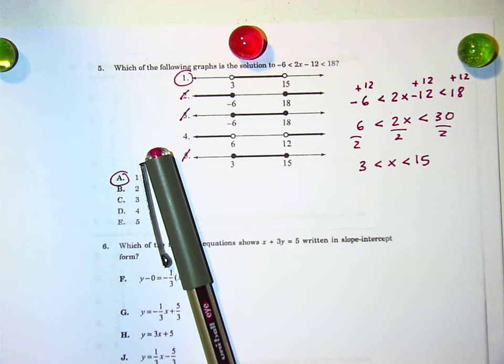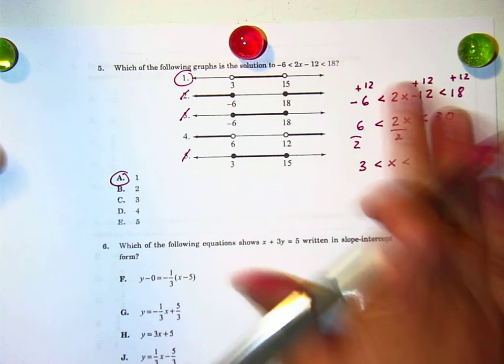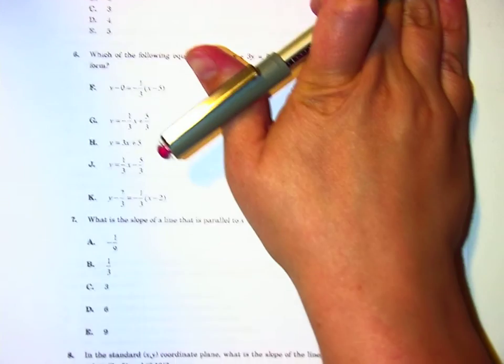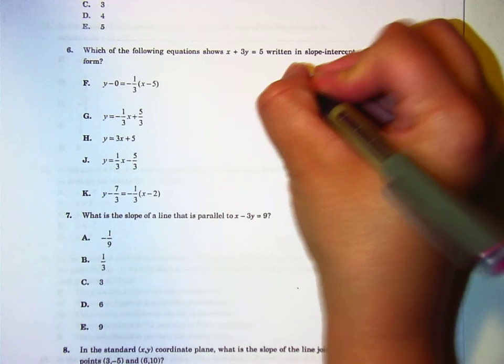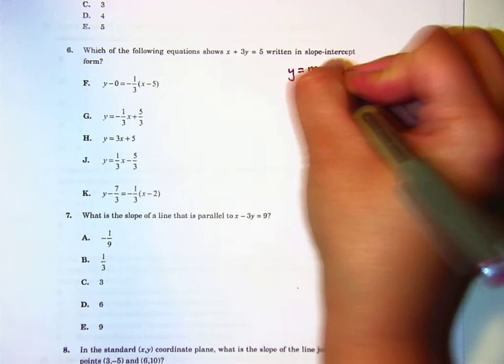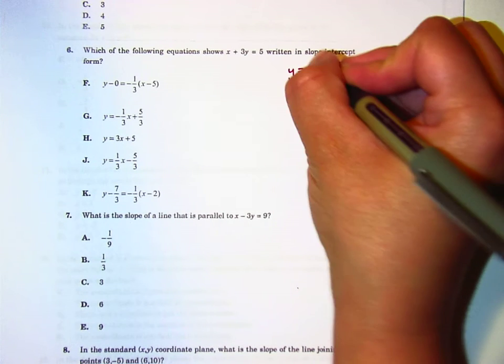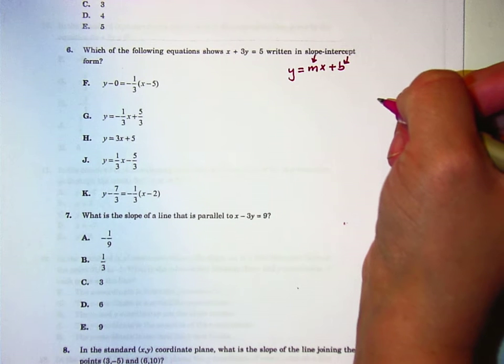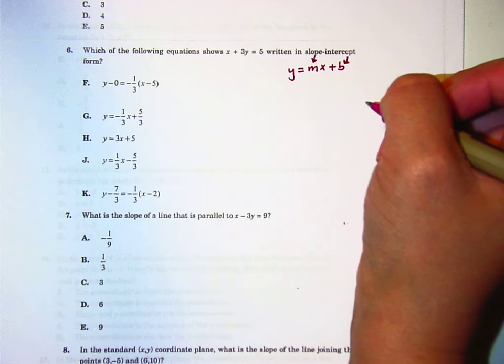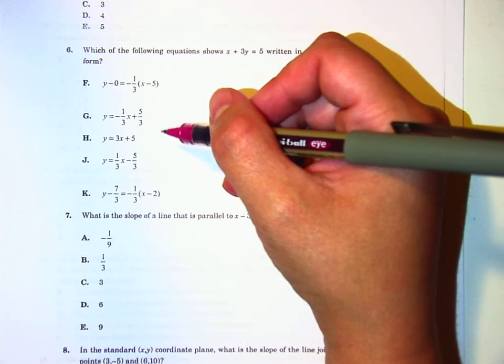Well, then I can go back. Alright, so next one, 6. Which of the following equations shows that written in slope-intercept form? So slope-intercept form looks like y equals mx plus b. The slope is m and the y-intercept is b.